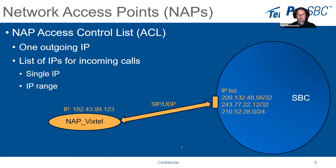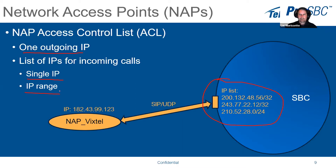One key concept is the Network Access Point (NAP) — an entry point to the system defining how the SBC can be reached. You can configure a single IP, an incoming IP, or an IP range. When sending calls out you define the destination IP; when receiving calls you define the incoming IP or subnet range, such as a /32 or a broader subnet.